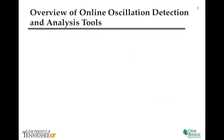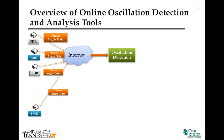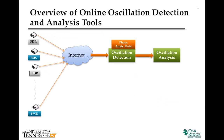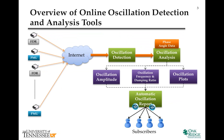The phase angle data are used for oscillation detection and analysis. The oscillation analysis module calculates amplitude, oscillation frequency, damping ratio, and generates plots. Automatic oscillation reports will be sent to subscribers through email.